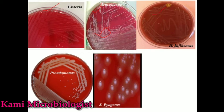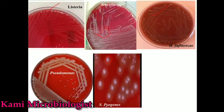Haemophilus influenzae also shows moist colonies. The image shows Streptococcus pyogenes creating hollow layers or zones. Pseudomonas shows smooth, irregular, round colonies. That's all about Brucella agar — I hope you got a good understanding. Thanks for watching.